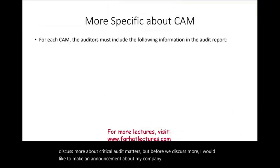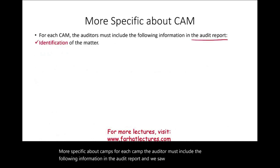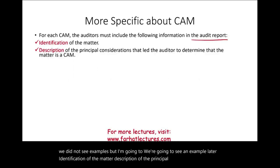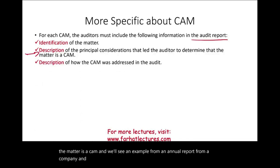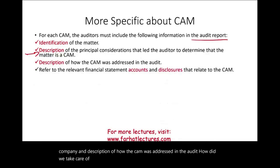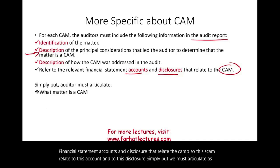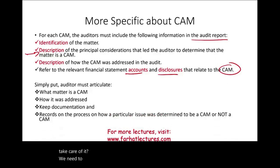For each CAM, the auditor must include the following information in the audit report: identification of the matter; a description of the principal considerations that led the auditor to determine that the matter is a CAM; a description of how the CAM was addressed in the audit; and a reference to the relevant financial statement accounts and disclosures that relate to the CAM. We must articulate what matter is a CAM, how it was addressed, and maintain documentation on how a particular issue was determined to be a CAM or not.